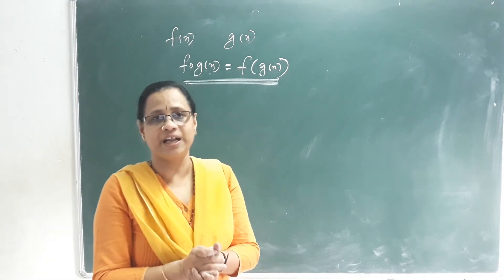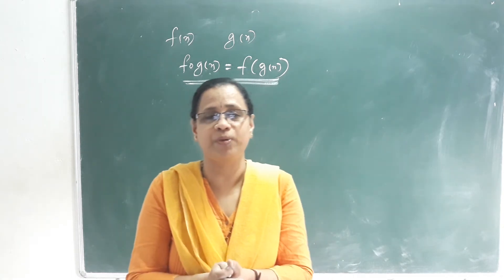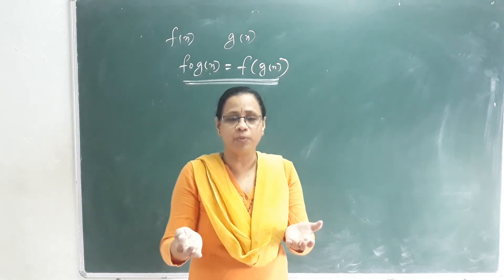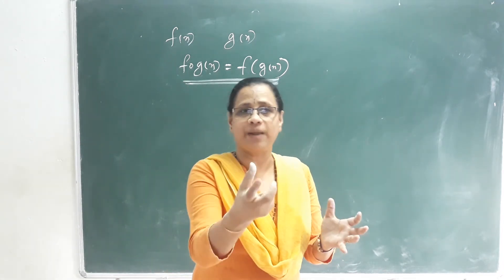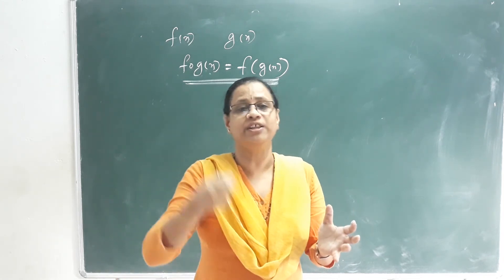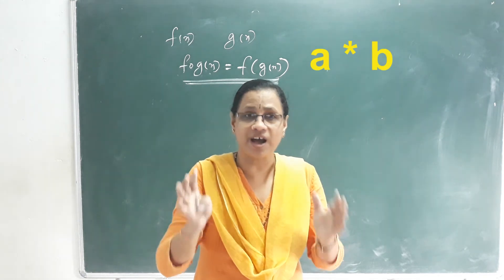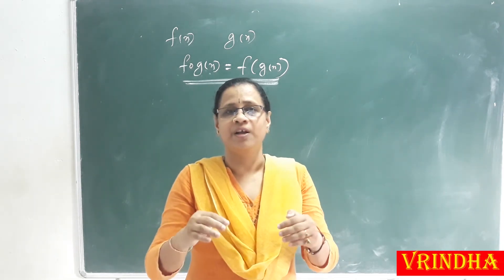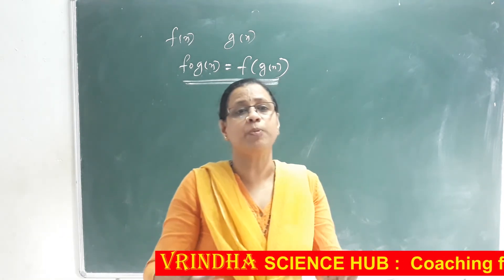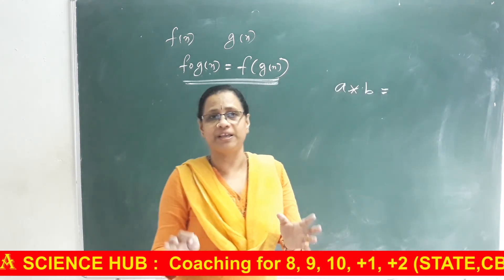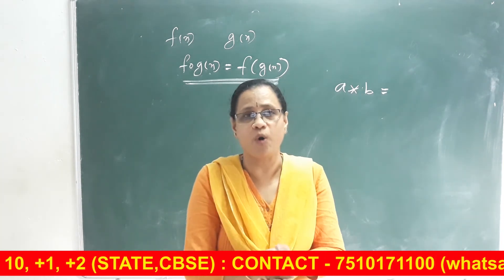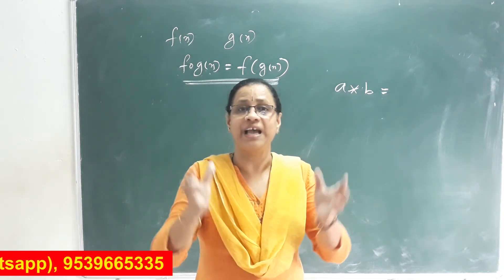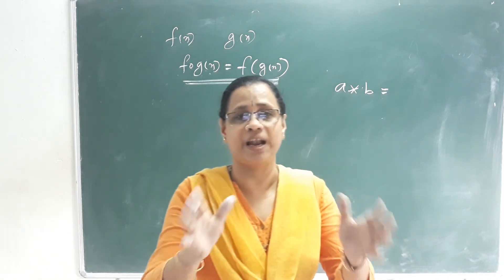The last topic is Binary Operations. A binary operation on a set S must satisfy the closure property: for any a and b in S, a★b must also be an element of S, for all a, b in S. This is how we define a binary operation — the result stays within the set.